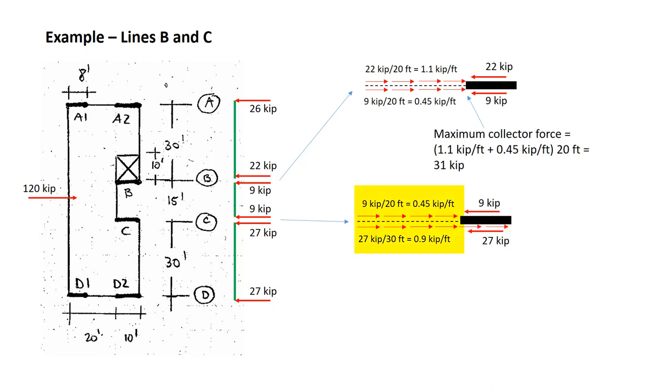The values of the distributed load have been calculated just the same as before by taking the total force, dividing it by the available length of diaphragm, 20 feet above, 30 feet below, and we can find the collector force by considering those distributed loads to accumulate over the length that is not on the lateral force resisting element. So we take the 0.45 kip per foot from above, the 0.9 kip per foot from below, add those up, multiply by the 20 feet over which they accumulate, and we get 27 kips.